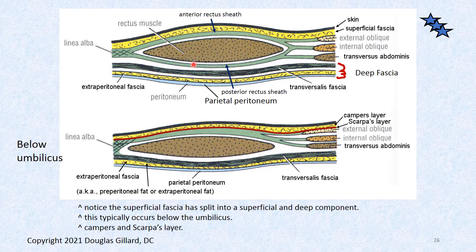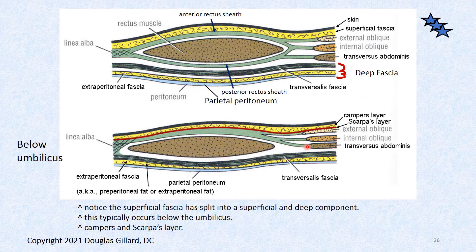You should know this for boards. The rectus abdominis has a rectus sheath — it's interesting. The external oblique fascia completely covers the anterior part of the rectus abdominis. The internal oblique splits: its outer leaf goes anterior, its inner leaf goes behind to create the posterior part of the rectus sheath. Then the transversus abdominis — both its layers go posterior. Once you get below the belly button, all the leaves go to the front.